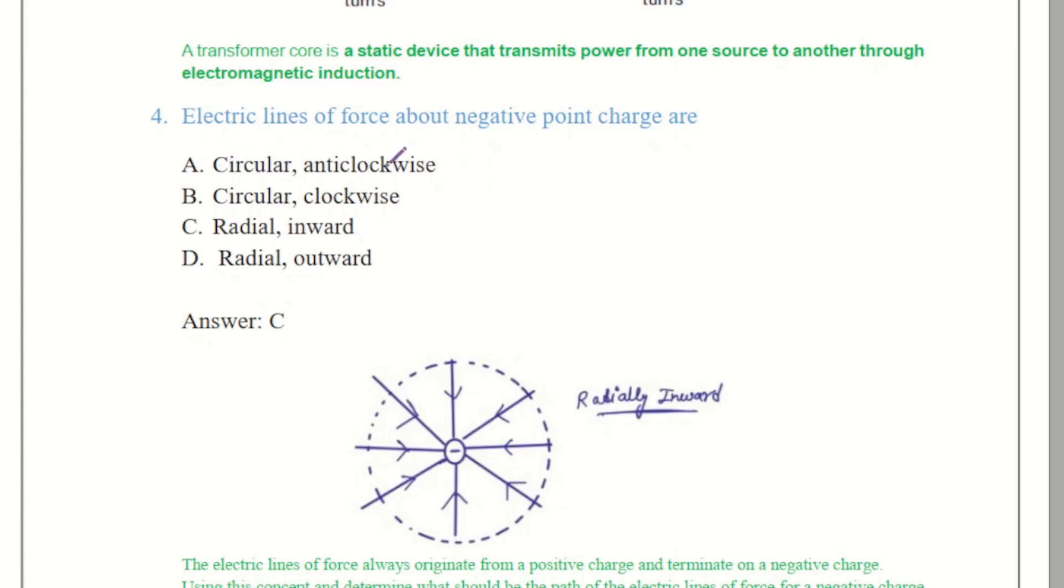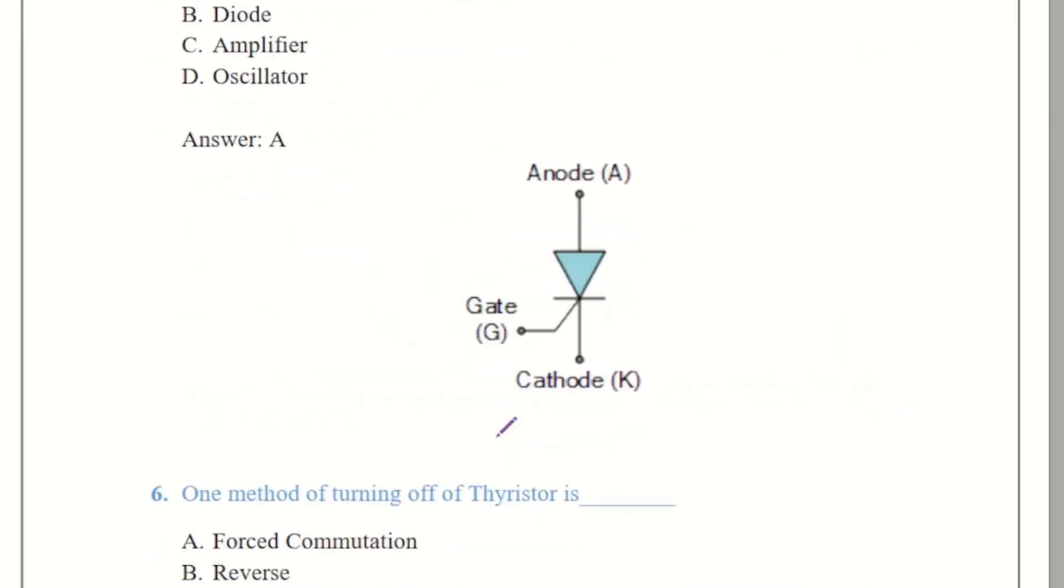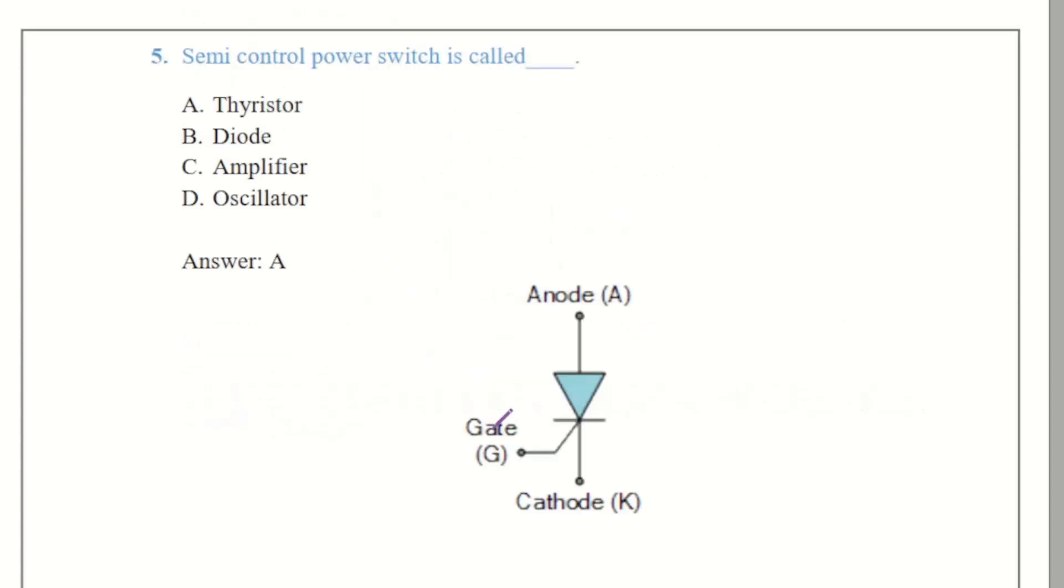So you can see circular is not, clockwise is also not, so inverse radial is the answer. Answer is C. Here comes the question number 5.